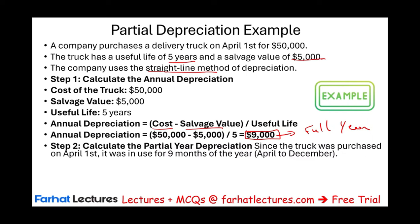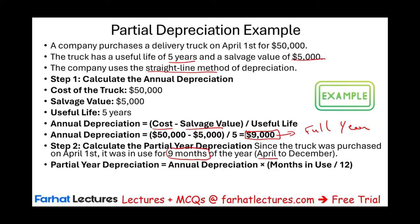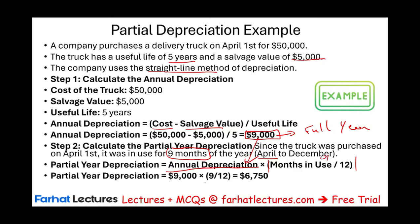Since we need to prorate it, we figure out how long we had and used the truck. We used it starting in April — 9 out of 12 months: April, May, June, July, August, September, October, November, and December. Therefore, we take the annual depreciation of $9,000 and multiply it by the prorated amount of 9/12, which gives us a partial year depreciation of $6,750.